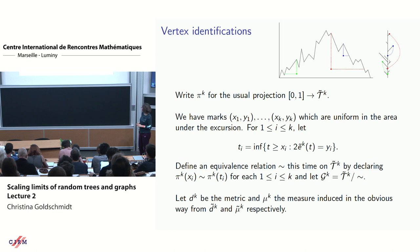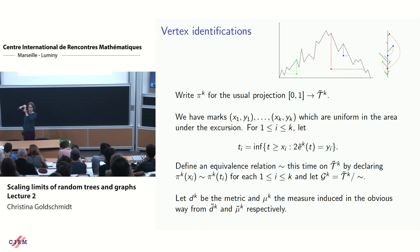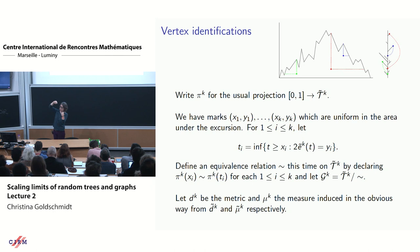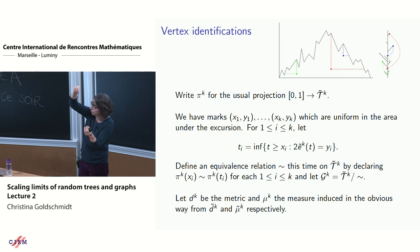What happens to distances when we glue two points? The shortest path may now pass through a gluing point, but we've only made k changes, so the distances are reorganized in a controlled way — potentially shortest paths go through those vertex identifications, but there are only finitely many of them. The measure essentially stays as it was on the tree.